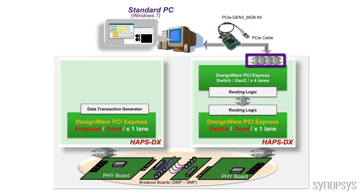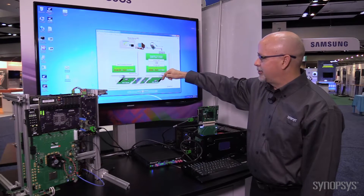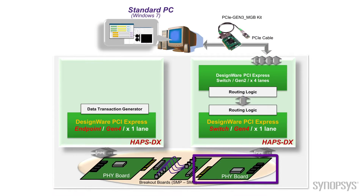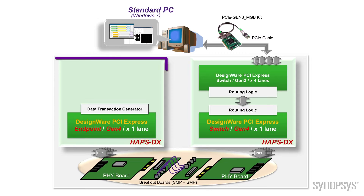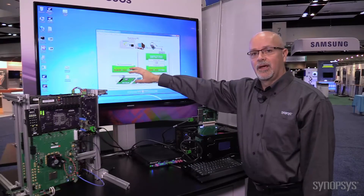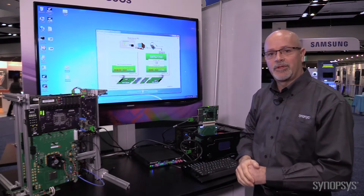We have four lanes here, giving us 20 gigabytes of data on the upstream port. We're using a single lane of PCI Express Gen 4, which will give us 16 gig. The downstream port goes through our PCI Express Gen 4 PHY, across the backplane, into another PHY, and then into our application running on another HAPS DX port. This application is an endpoint device that's going to help us transfer data to do system performance measurements.